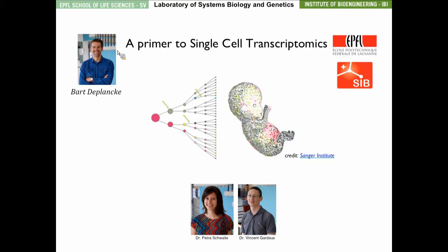At the Laboratory of Systems Biology and Genetics, Bart and his team use high-throughput sequencing, single-cell genomics, microfluidics, large-scale yeast screening and computational approaches to characterize the regulatory code in Drosophila and in mammals. They are also interested in examining how variation in this code affects molecular and organismal diversity. Additionally, the group actively develops new research tools and pipelines that enable better characterization of gene regulatory networks. Today Bart will give us a primer to single-cell gene expression analysis.